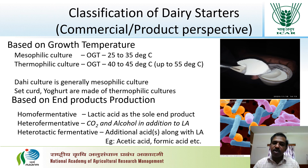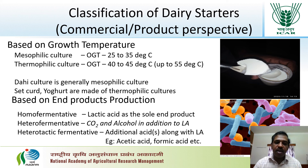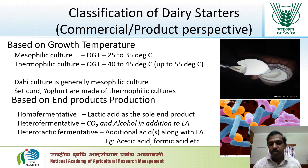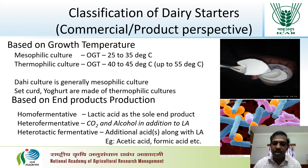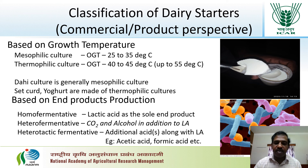In homofermentative fermentation, as the name suggests, lactic acid is the key or sole end product. In heterofermentative fermentation, carbon dioxide and alcohol are produced in addition to lactic acid. In heterolactic fermentation, additional acids such as acetic acid and formic acid are produced along with lactic acid.